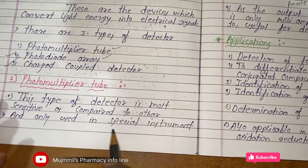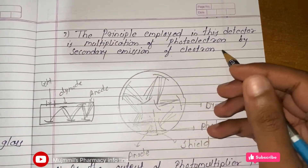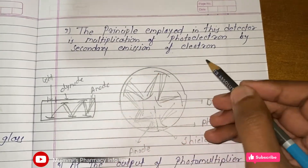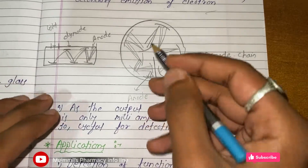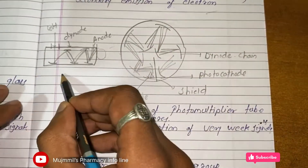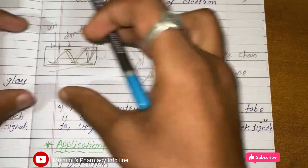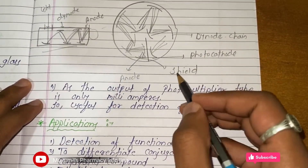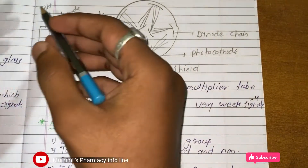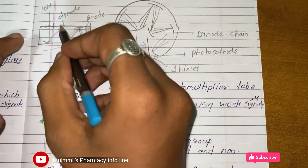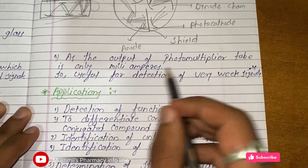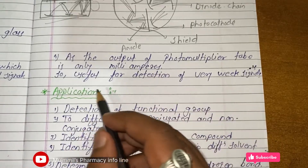The principle of the photomultiplier tube is the multiplication of photoelectrons by secondary emission of electrons. The tube has a dynode chain, a photocathode, and a shield. When light enters, it travels through the dynode chain and exits from the anode. The output of the photomultiplier tube is in milliamperes, making it useful for detection of very weak signals.